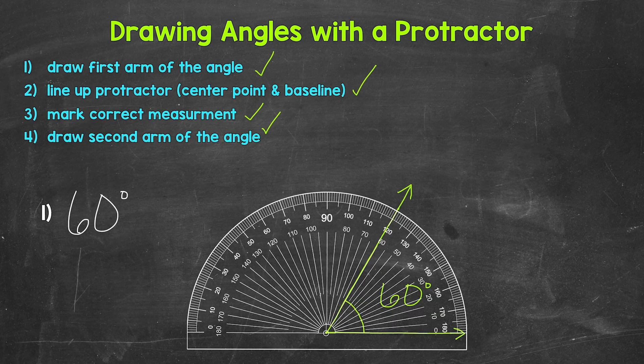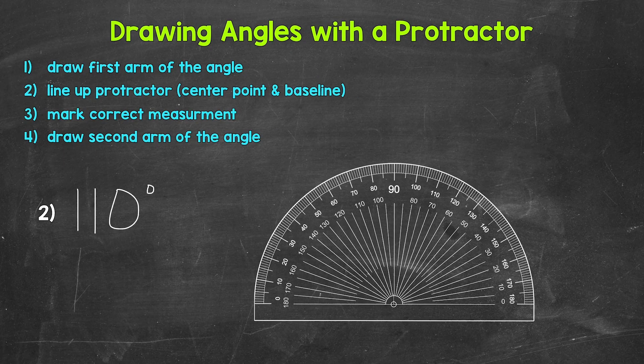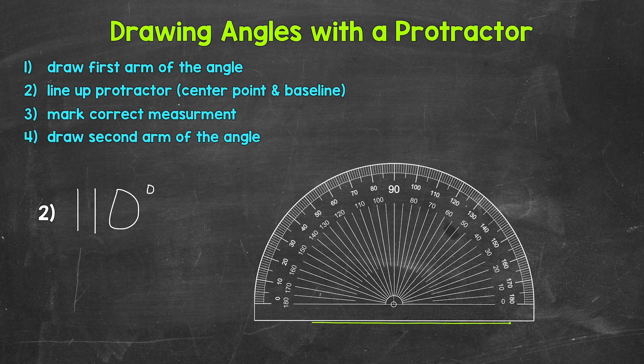Let's move on to number two. For number two, we need to draw a 110 degree angle. First step: draw the first arm of the angle using a straight edge — a nice and straight line. I'm going to put a small dot on one end to show where our vertex will be. For this example, let's put the dot on the right side. Remember, this can be on either end of the line — we can make the angle either way. And that's our first arm.